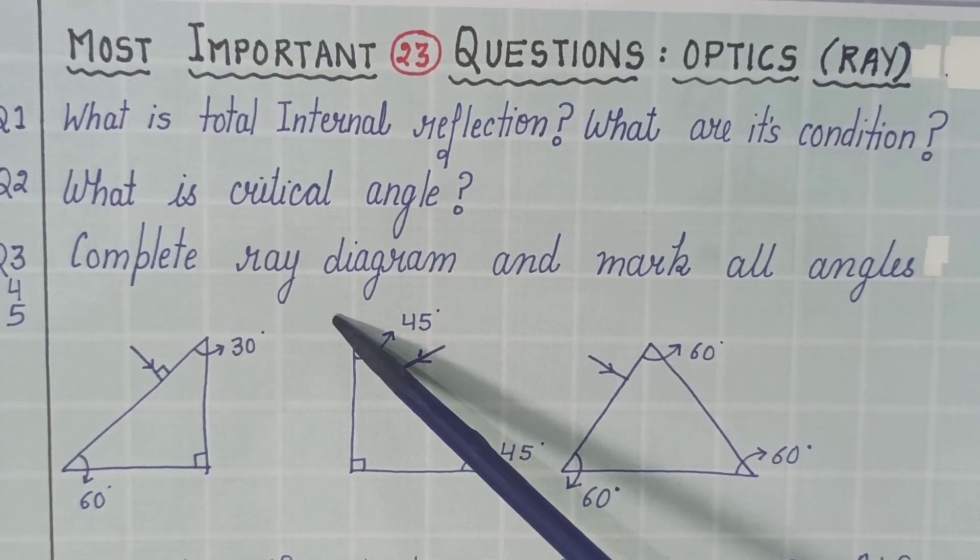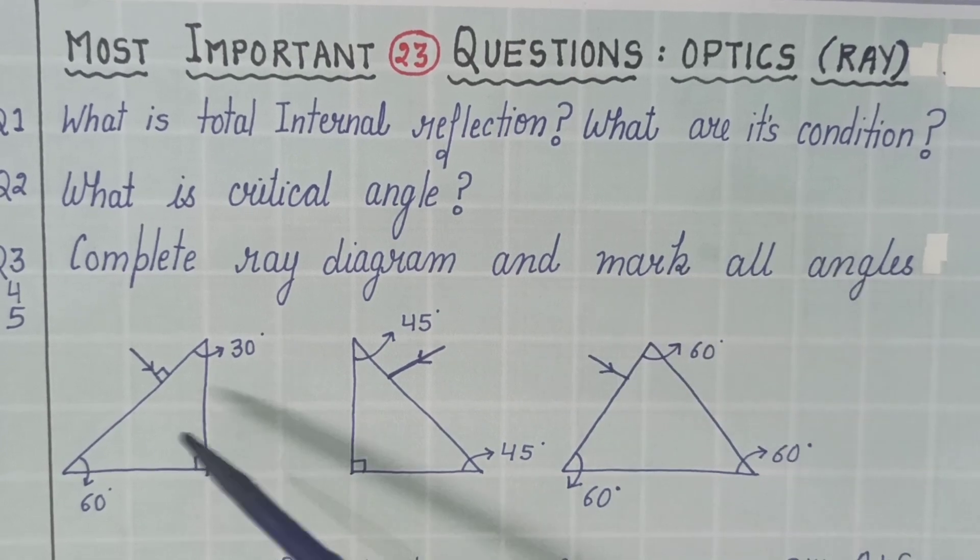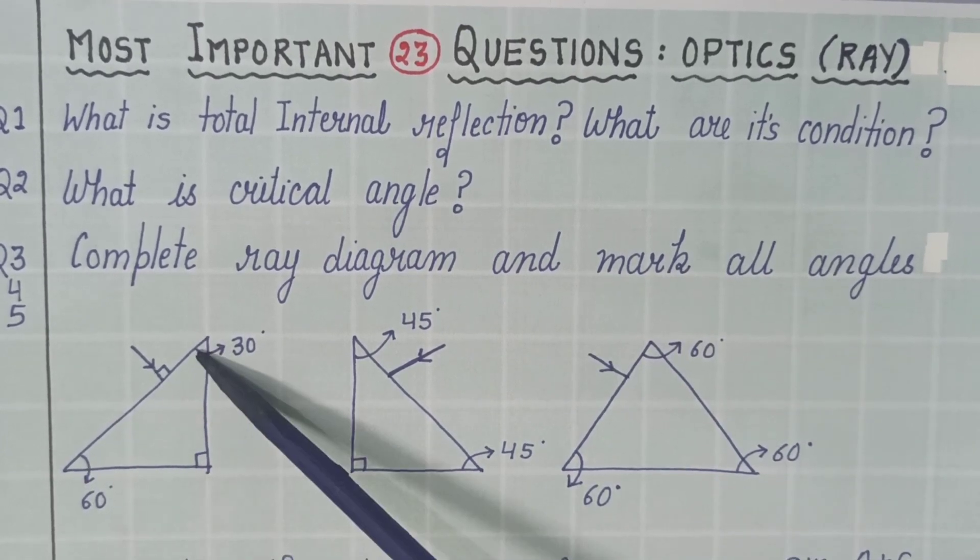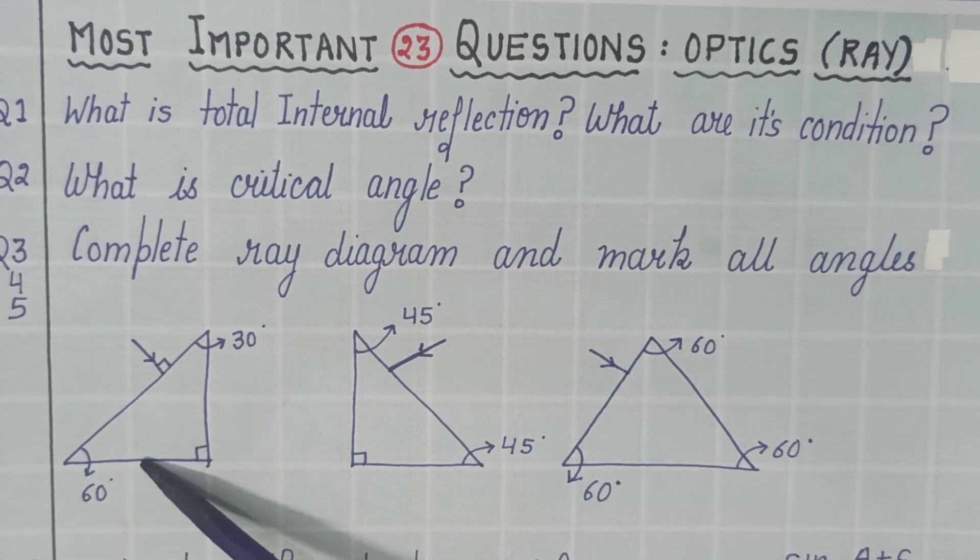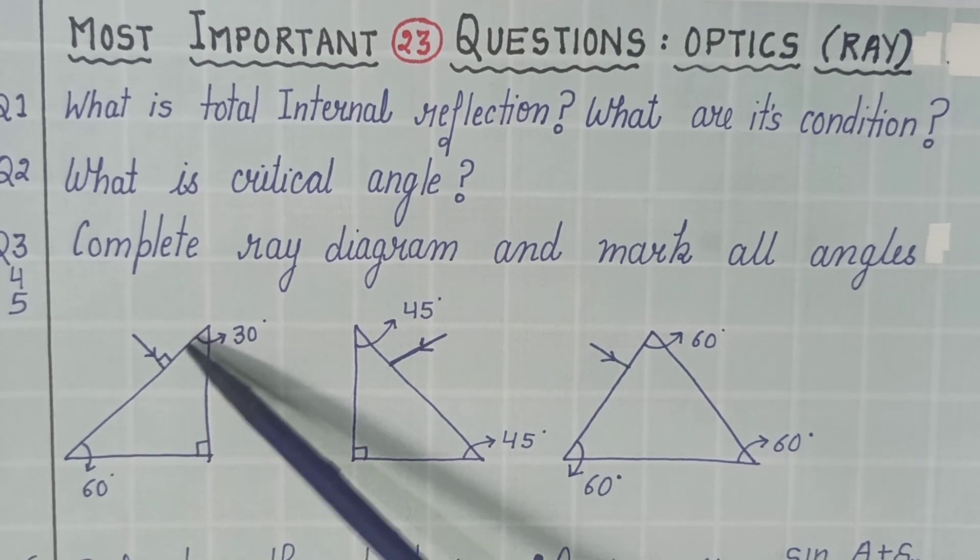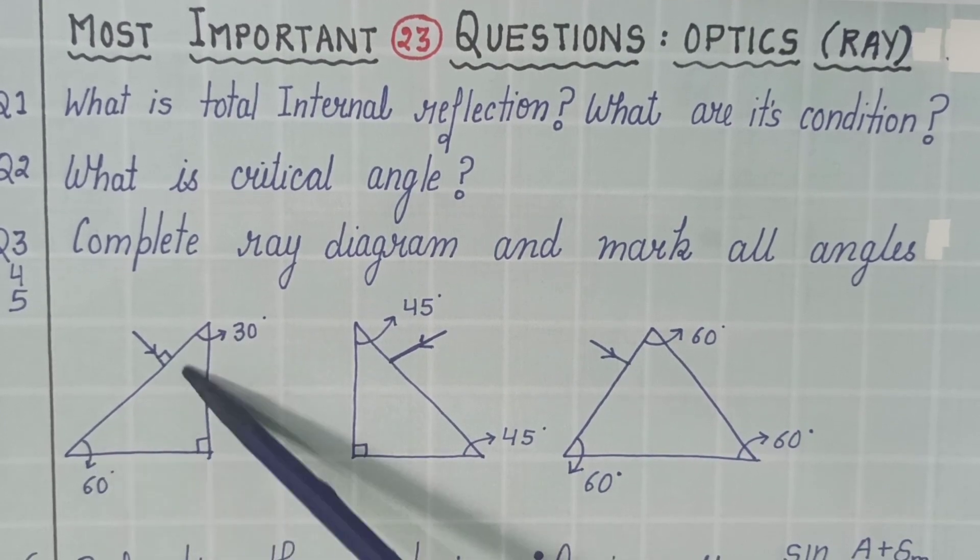complete ray diagram and mark all the angles. That means at every surface you have to show the refraction and you have to show the angle of incidence and angle of refraction. In the first diagram you are having 90 degree, 30 degree, 60 degree triangle prism.